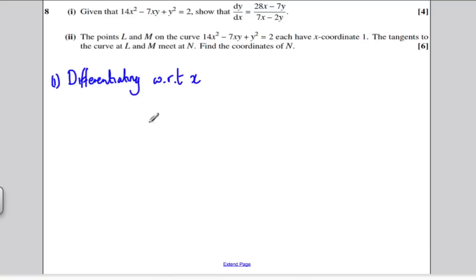I'm going to do each term separately. So d/dx of 14x² is 28x. You multiply by the power, 14 times 2 is 28, and you reduce the power by 1.